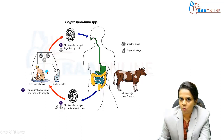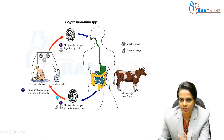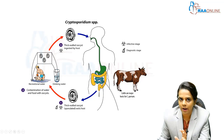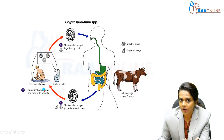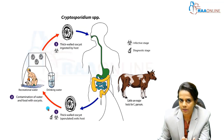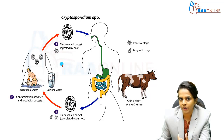Both thick and thin walled oocysts cause transmission of infection. The sporulated thick walled oocysts contaminate food and water, causing infection by ingestion. The thin walled oocysts cause auto-infection through contaminated fingers.